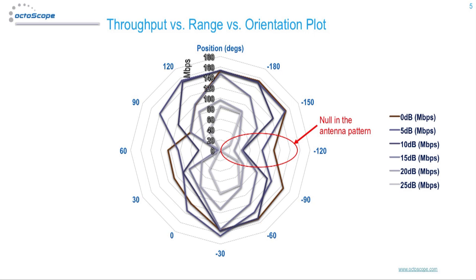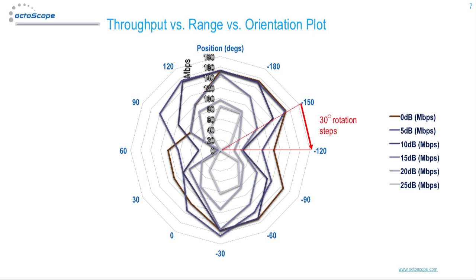This particular plot shows an antenna pattern exhibiting deep nulls. These measurements are taken at 5 dB attenuation steps and 30-degree rotation steps. The script records throughput at each rotation step versus the desired range of attenuation steps. Step sizes and the throughput measurement period are completely programmable.